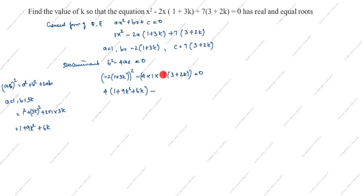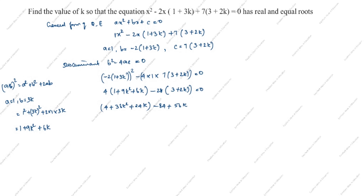So we have 4(1 plus 9k squared plus 6k) minus 28(3 plus 2k) equals 0. Expanding: 4 plus 36k squared plus 24k, minus 28 into 3 is 84, minus 28 into 2k is 56k. Note that minus into plus gives minus, so minus 56k.